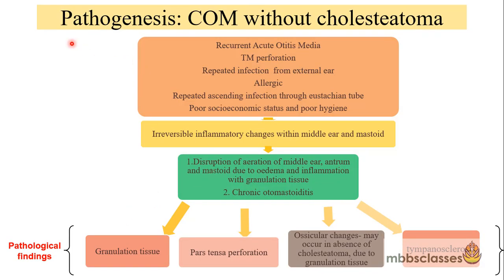Let us see the pathogenesis of chronic otitis media without cholesteatoma. Due to recurrent infection, whether ascending through the eustachian tube or as a sequela of acute otitis media, it leads to irreversible inflammatory changes in the middle ear and the mastoid. As a result, there is disruption of aeration of the middle ear cleft due to edema and granulation tissue.